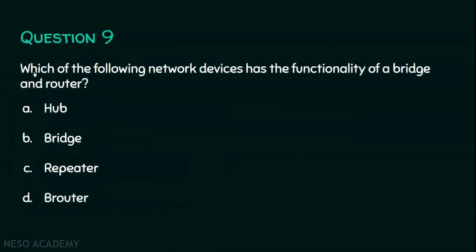Question number nine: which of the following network devices has the functionality of both a bridge and a router? Option A: hub. Option B: bridge. Option C: repeater. Option D: router. The answer is option D, router, because router has the functionality of a bridge as well as a router — it can act as a layer two bridge as well as a layer three router.